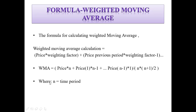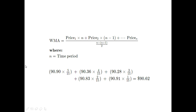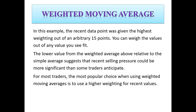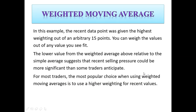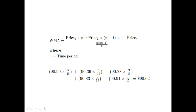Here is an example of the weighted moving average formula applied in an equation. The most recent data point is given the highest weighting out of five arbitrary points. With five points we have weightings of 5/15, 4/15, 3/15, 2/15, and 1/15. You can weigh the values out of any value you see fit.